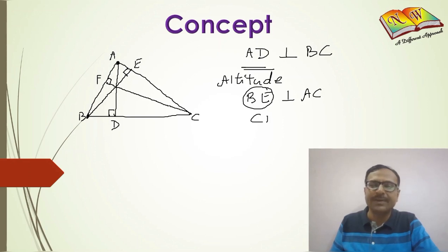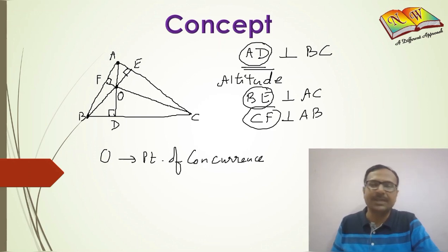So CF is perpendicular to AB. So I can draw three different altitudes: AD, BE, and CF. And surprisingly these three altitudes when drawn correctly will pass through the same point. This point O where the three altitudes meet is known as the point of concurrence of the three altitudes.